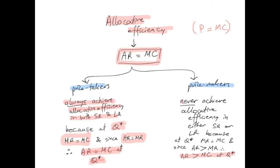A price maker, on the other hand, will never achieve allocative efficiency in either the short run or the long run. Whenever the firm has any control over price, it deliberately restricts output and raises the price. At Q* — the level of output where the firm maximizes its profit — MR will equal MC, but AR will always be higher than marginal revenue, meaning price will always be higher than marginal revenue.